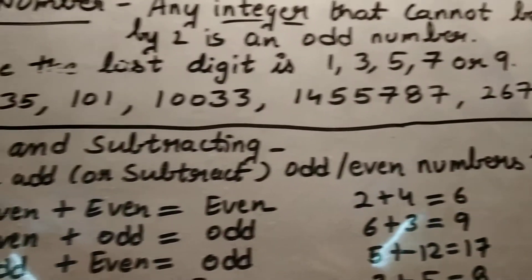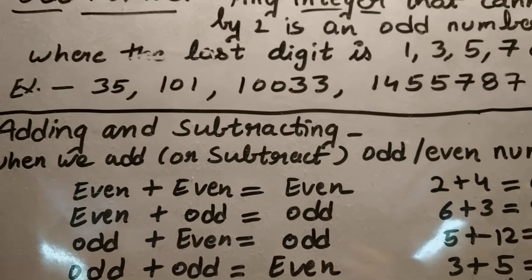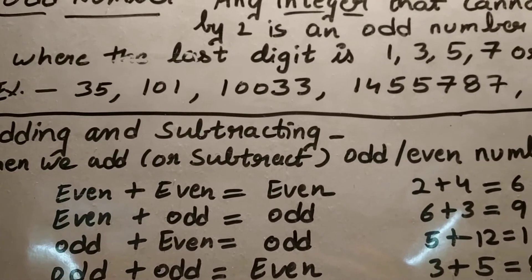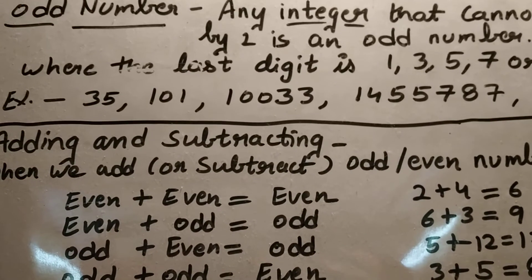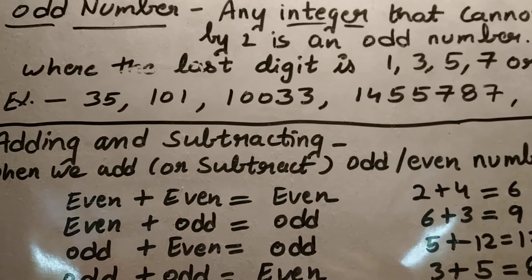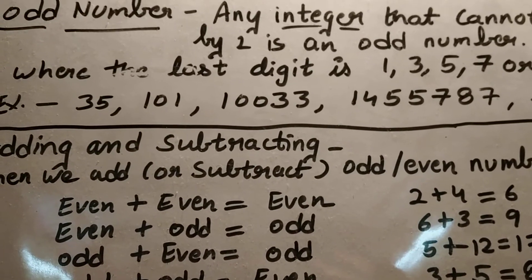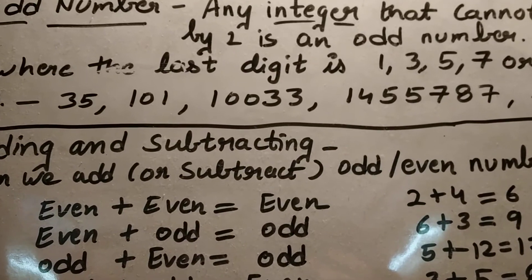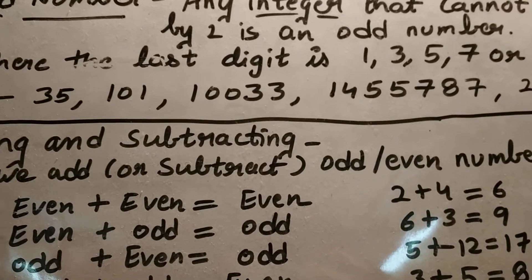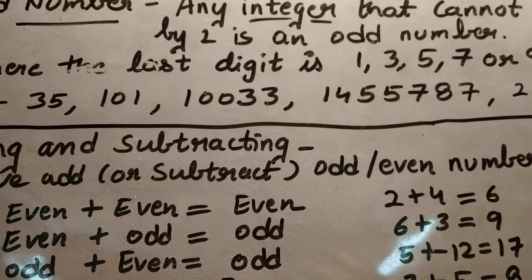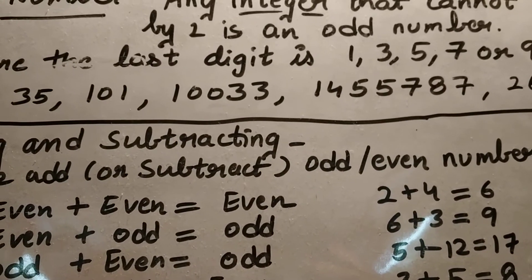Where the last digit is one, three, five, seven, or nine, the number is odd. Now look at the example 35 — always look at the ones place. Five is not divisible by two, meaning five doesn't appear in the two-times table, so 35 is an odd number.